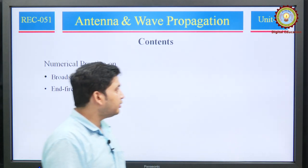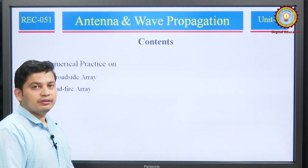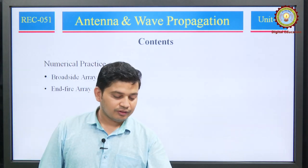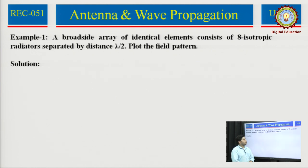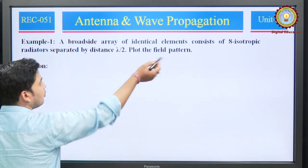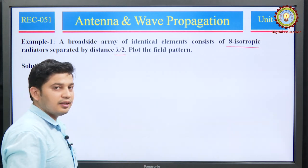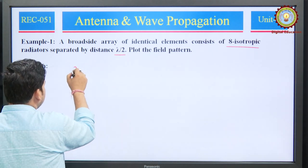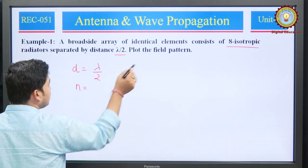We will first start with numerical practice on broadside array and then discuss one example on endfire array. Here is the first question: a broadside array of identical elements consists of 8 isotropic radiators separated by a distance λ/2, and we have to plot the field pattern. Remember, in a broadside array, δ (phase difference) is equal to 0. We are given 8 isotropic radiators with spacing d = λ/2.